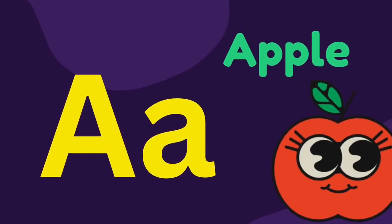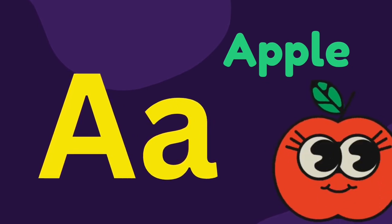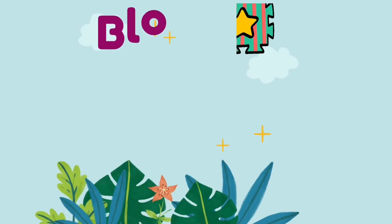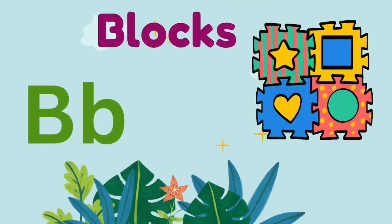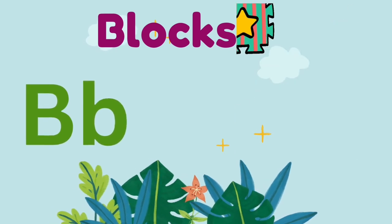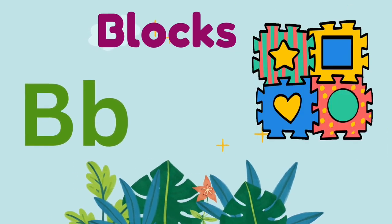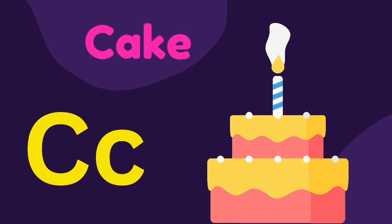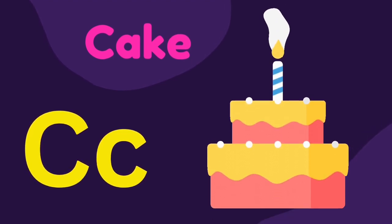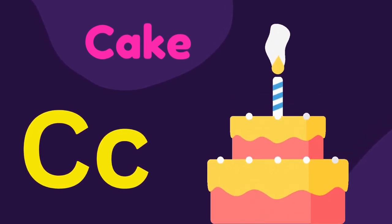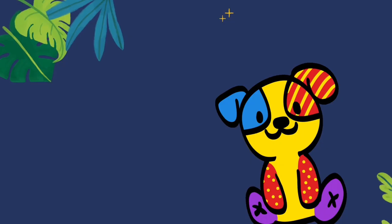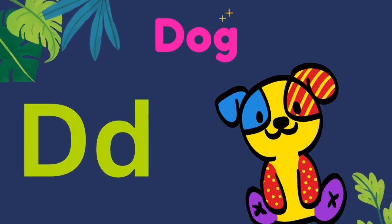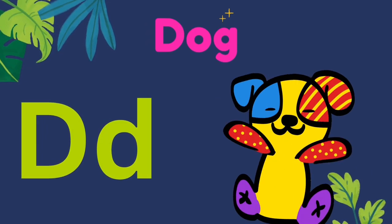A is for Apple. B is for Blocks. C is for Cake. D is for Dog.